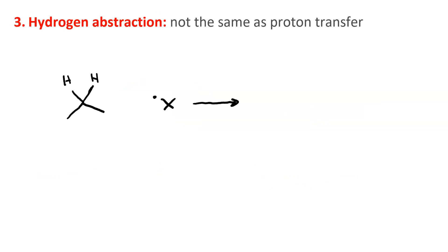Hydrogen abstraction is not the same as proton transfer. Because, in hydrogen abstraction, a whole hydrogen atom is transferred, including its electron. You need three curved arrows for this pattern.